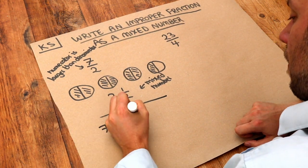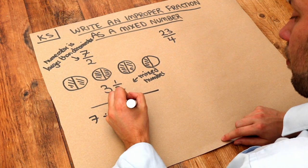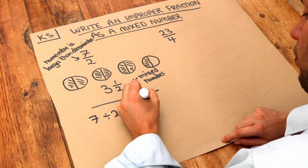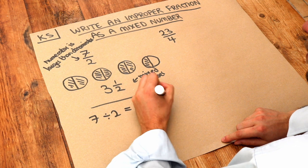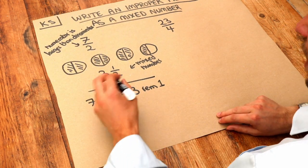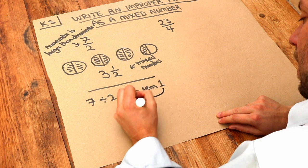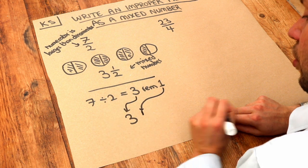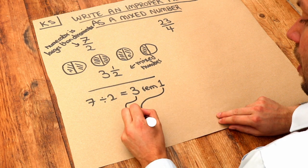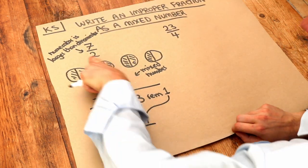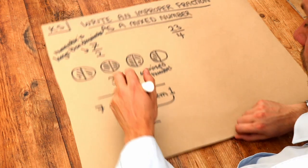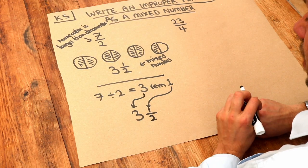2 goes into 7 three whole times with a remainder of 1. Therefore, for the mixed number, you put the 3 as the whole part, and then the remainder you put as the numerator of the fraction. The denominator will be the same as the denominator of the original fraction. So it'd be 3½.